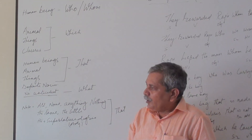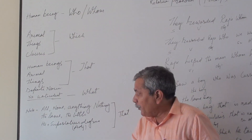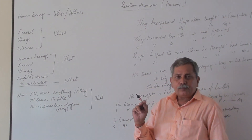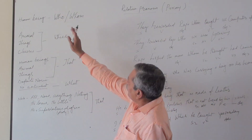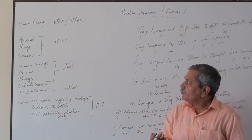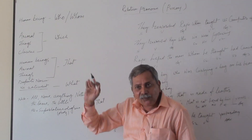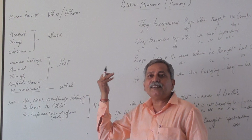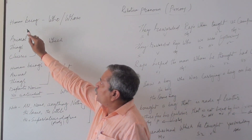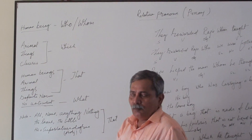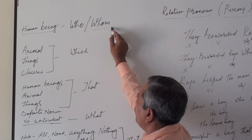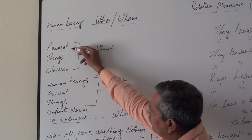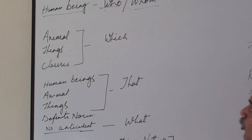Very simple. When the antecedent — you might be thinking what this antecedent is. Antecedent is the word that comes before the relative pronoun. In other words, a relative pronoun refers to the antecedent. So when the antecedent is a human being, we use who or whom, depending on the case. When the antecedent is an animal, thing, or clause, we use which.